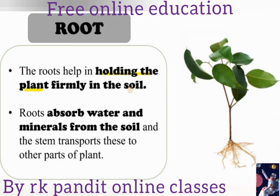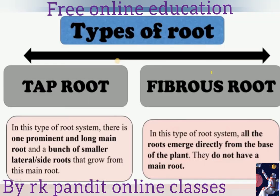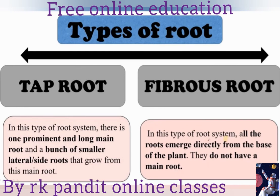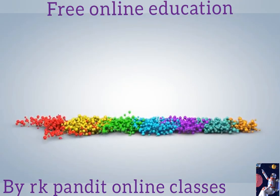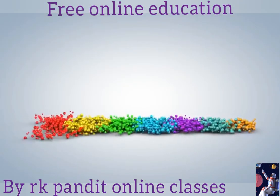The root helps hold the plant firmly in the soil, and the root absorbs water and minerals from the soil. There are two types of roots: tap root and fibrous root. Fibrous roots are small roots of similar size formed from the base. The tap root is the main root, which grows as a single thick main root with smaller branches.